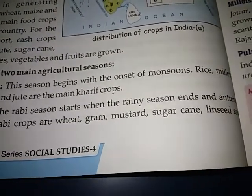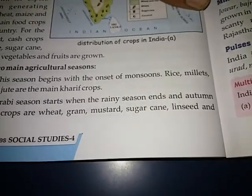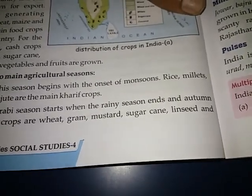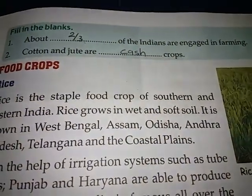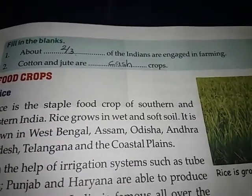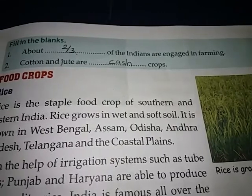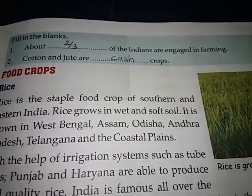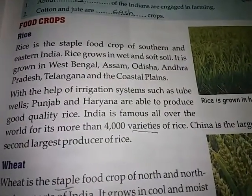Second, the Rabi season - the Rabi season starts when the rainy season ends and the autumn season begins. Main Rabi crops are wheat, gram, mustard, sugar cane, linseed and barley. Now filling the blanks: about two-thirds of the Indians are engaged in farming. Cotton and jute are cash crops.